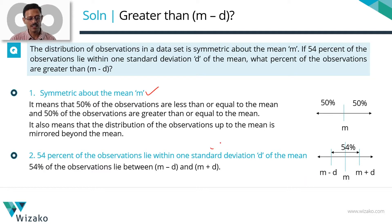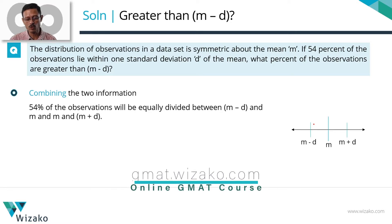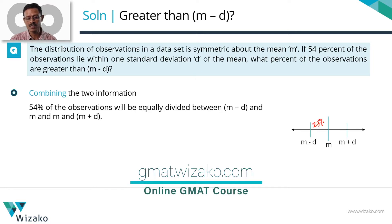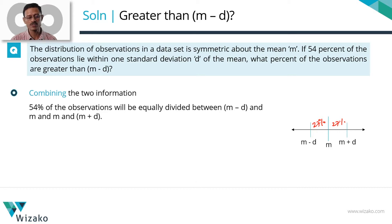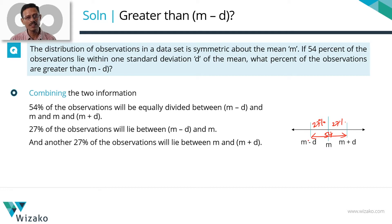Let's put this information together. Between mean minus deviation and mean, because the distribution is symmetric about the mean, of that 54%, 27% will lie on the left side between mean minus deviation and mean, and another 27% will lie between mean and mean plus deviation. Since it is symmetric about the mean, the distribution is equally split as 27 to the left of the mean and 27 to the right.